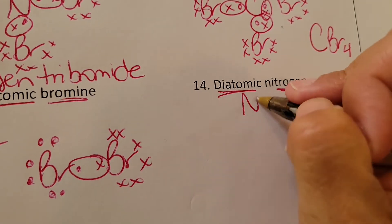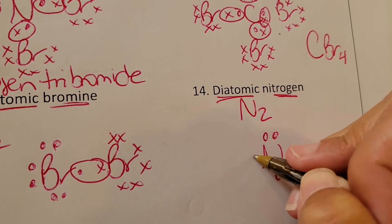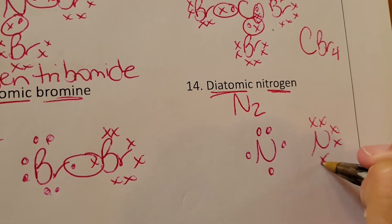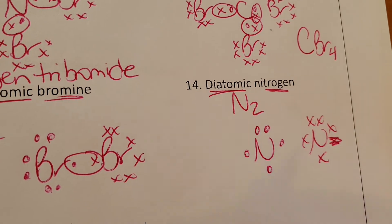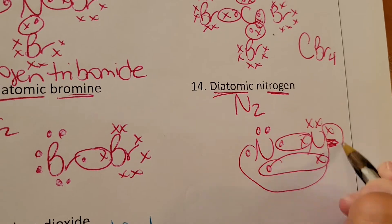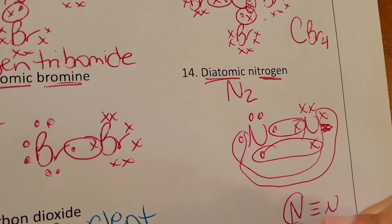Diatomic nitrogen, N2. Nitrogen has five. One, two, three, four, five. One, two, three, four, five. So we're going to share, share, and share. So in other words, a triple bond like that.